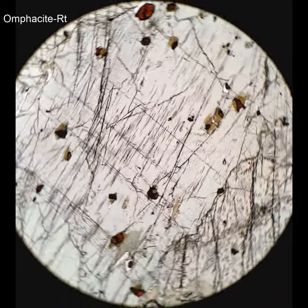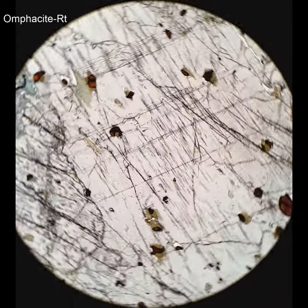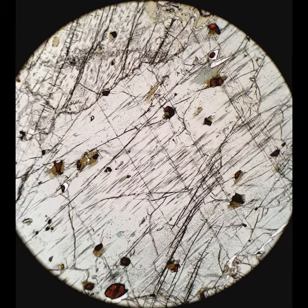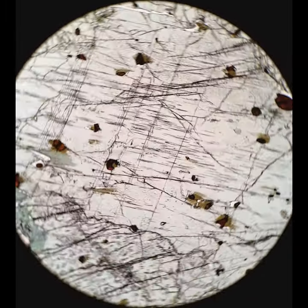This is more omphacite. Very, very slightly green pleochroic, not nearly as much as the blue-green amphibole. There's a couple of little grains in there.